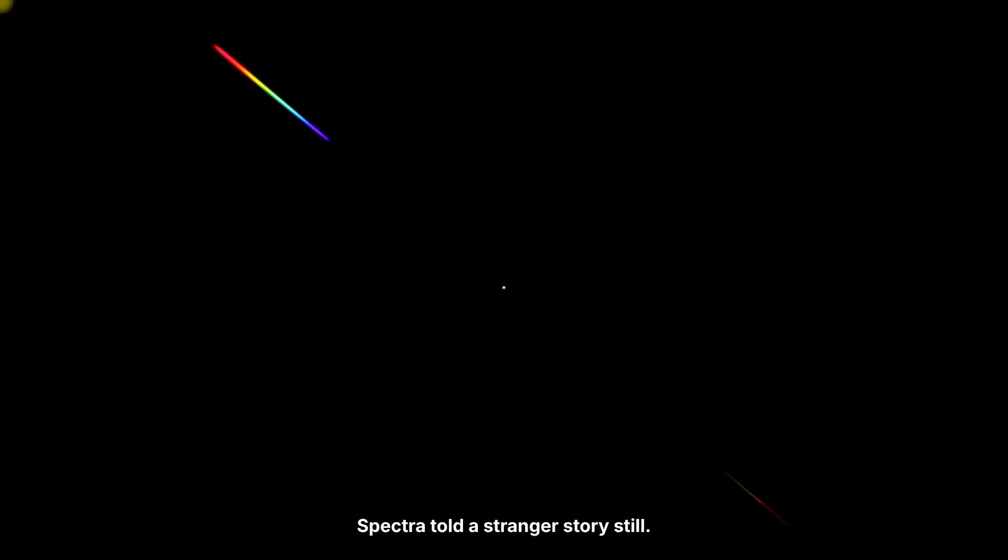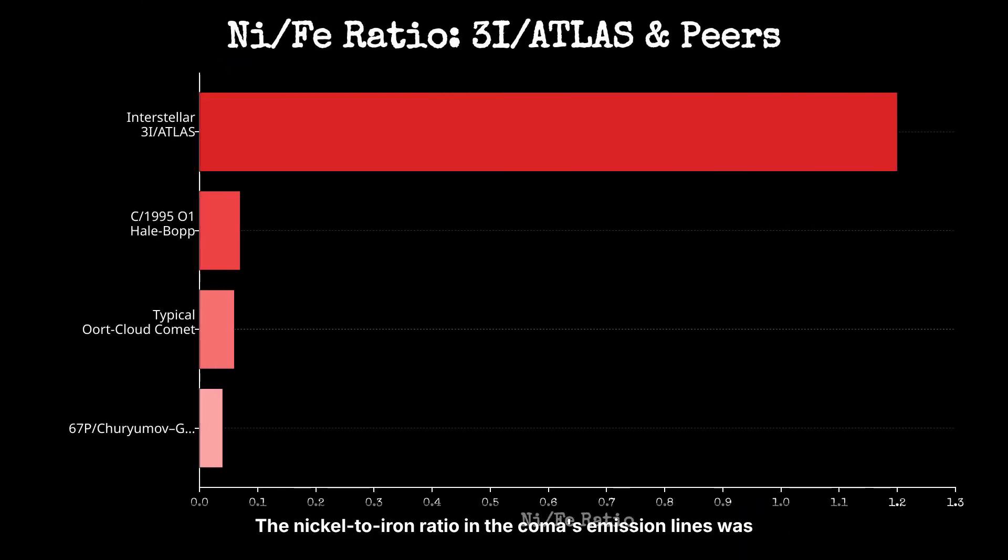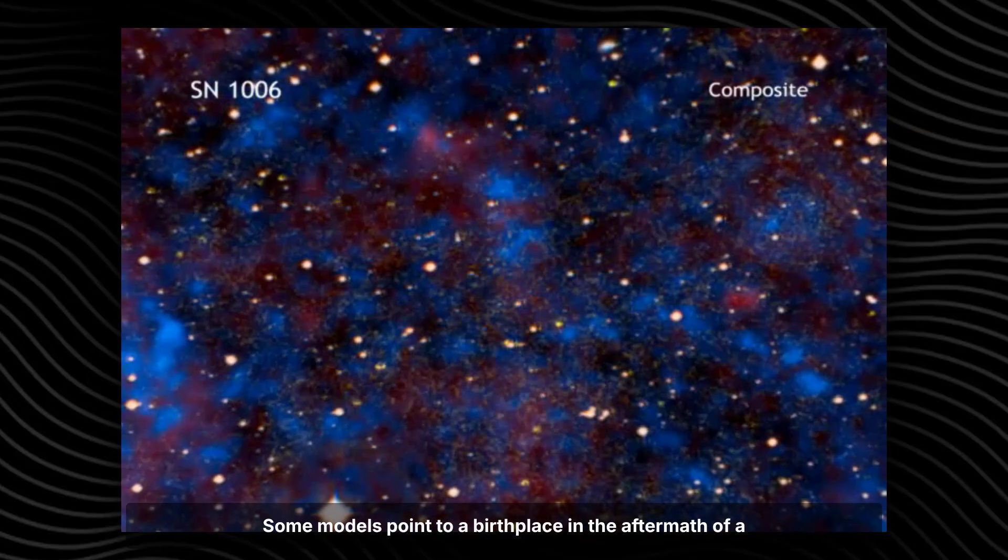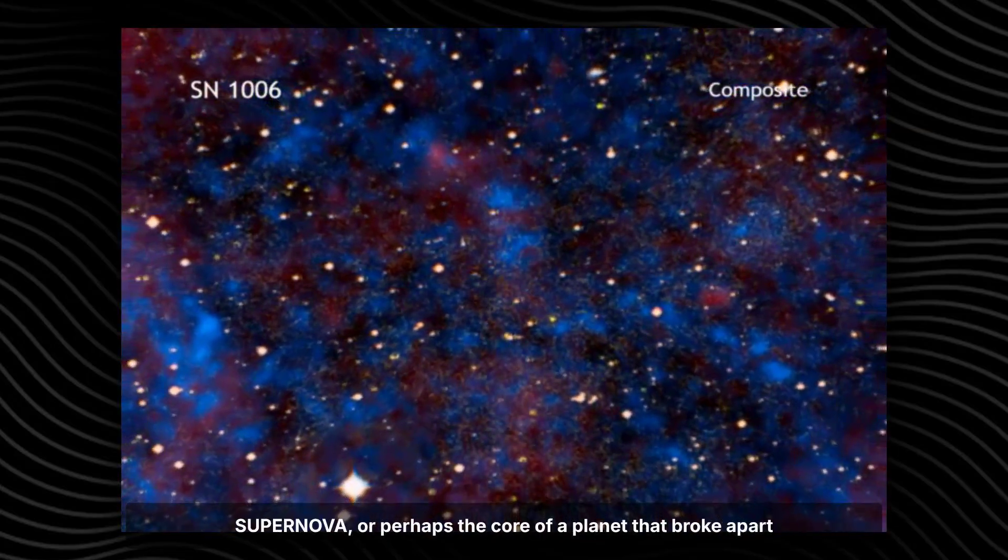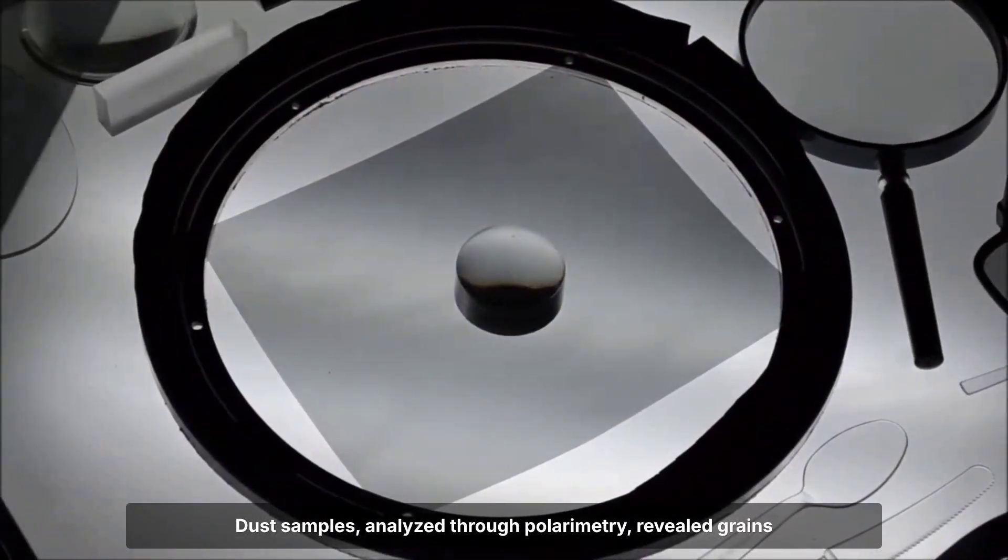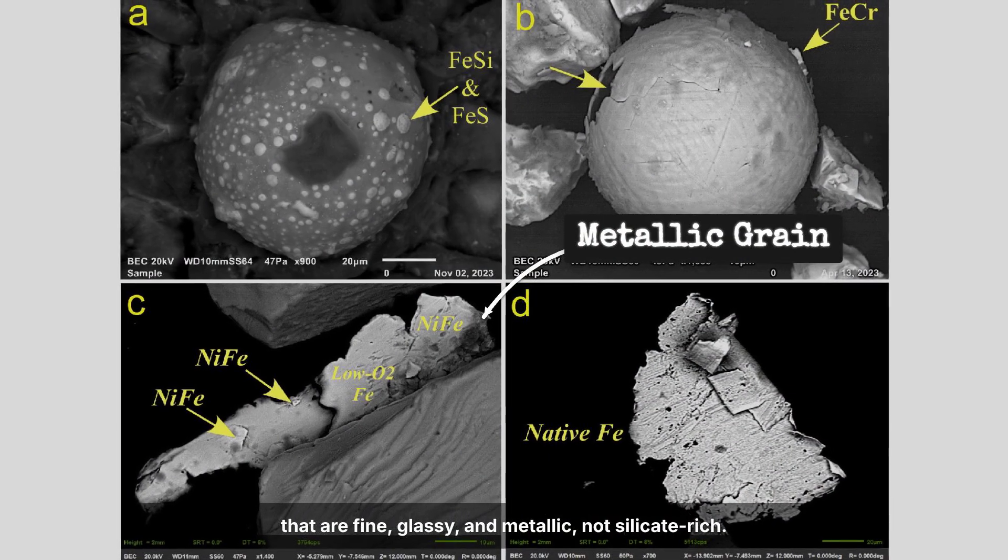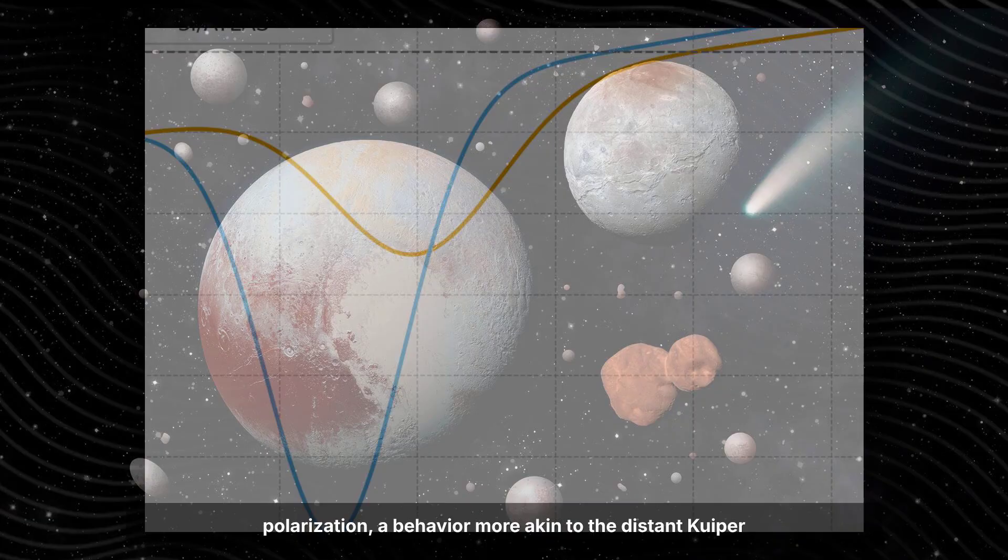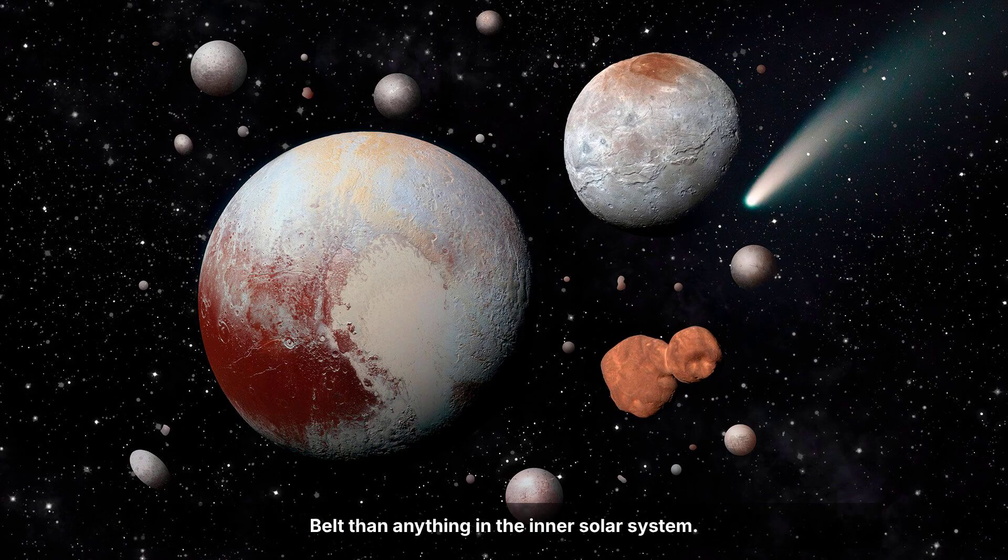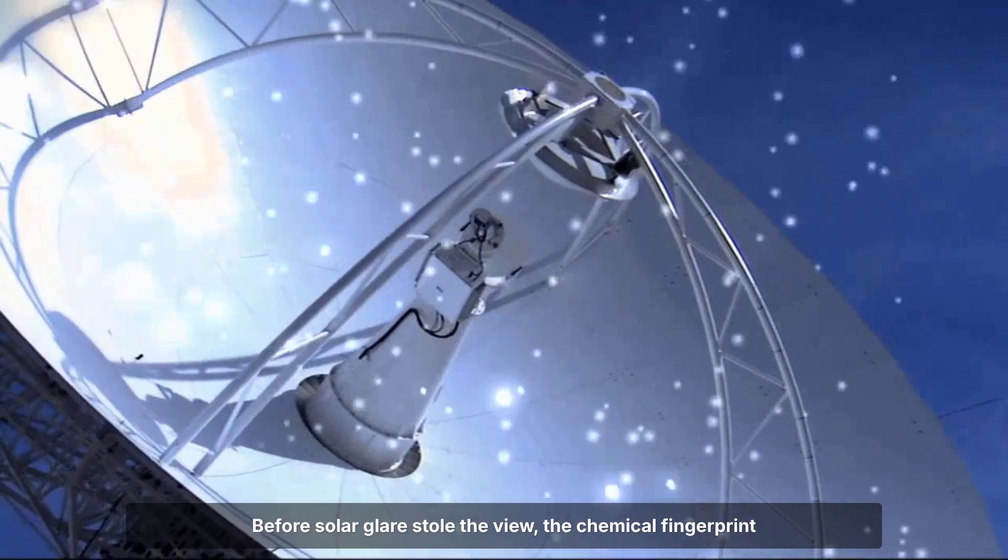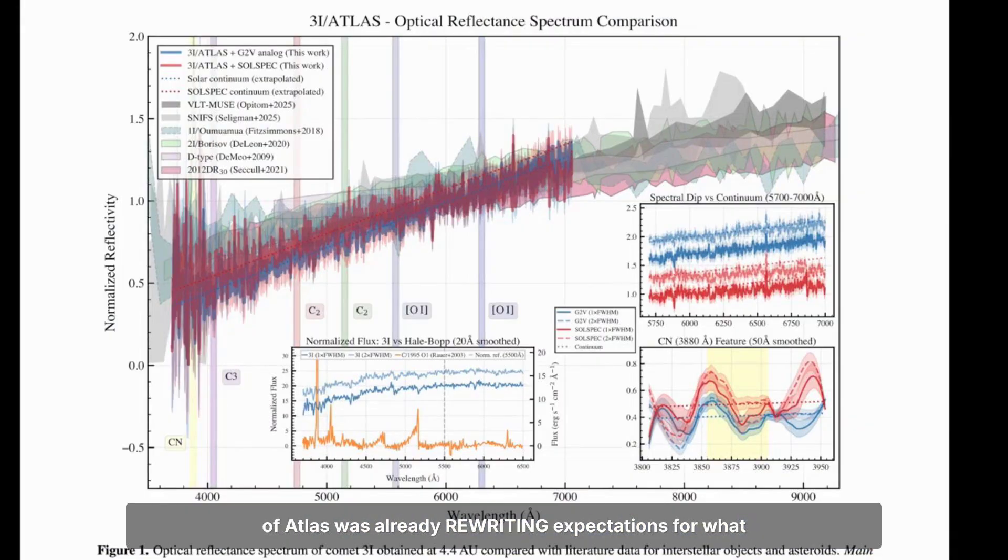Spectra told a stranger story still. The nickel-to-iron ratio in the coma's emission lines was off the charts. Nickel features outshining iron by margins not seen in local comets. Some models point to a birthplace in the aftermath of a supernova, or perhaps the core of a planet that broke apart long ago. Dust samples, analyzed through polarimetry, revealed grains that are fine, glassy, and metallic, not silicate-rich. The light scattering off this dust showed strong negative polarization, a behavior more akin to the distant Kuiper belt than anything in the inner solar system. Each new measurement added weight to the sense of otherness. Before solar glare stole the view, the chemical fingerprint of Atlas was already rewriting expectations.